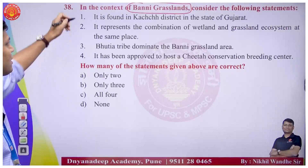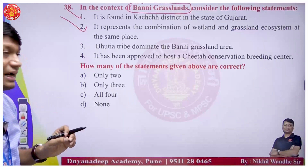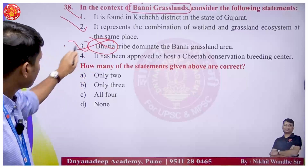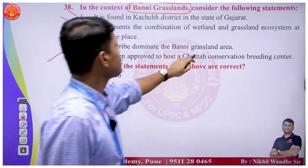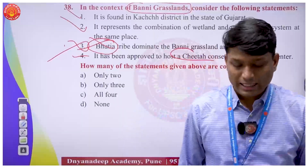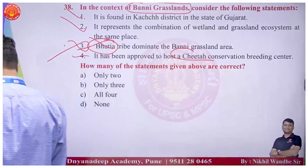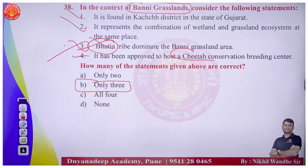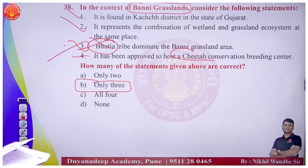Banni grassland: it is a combination of wetland and grassland ecosystem found in Kutch. In some parts wetland areas are also found. Bhutia is NOT the tribe found in Banni grassland. It has been approved to host a cheetah conservation breeding center. Option B - only three statements are correct in question 38.